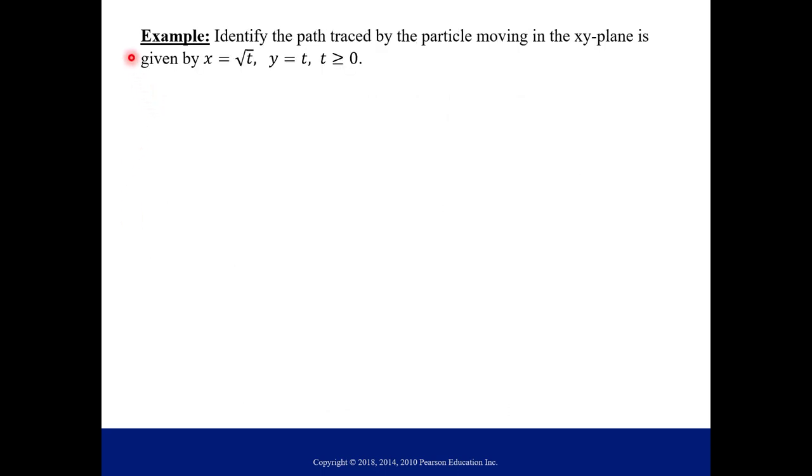Let's do one more example. We are going to identify the path traced by a particle moving in the xy-plane that is given by x = √t, y = t, for t ≥ 0. What you're going to do this time is try to eliminate t. Based on your equations, you're going to try to put them together somehow, get rid of t, and hopefully it's going to give you something that you recognize as far as a function. We are going to start with x. If I square the equation for x, I know that x² is the same as t.